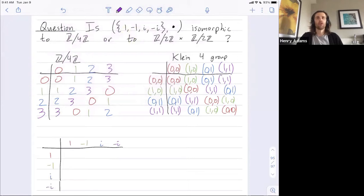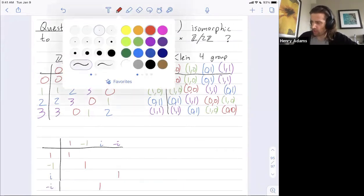So where are the 1s in this multiplication table? Well, 1 times 1 is 1. Negative 1 times negative 1 is 1. And then i times negative i is negative i squared. i squared is negative 1, so negative i squared is 1.